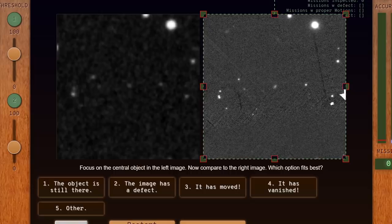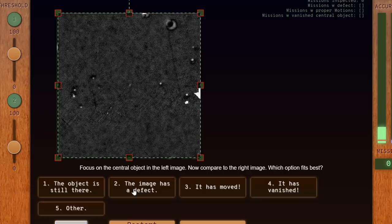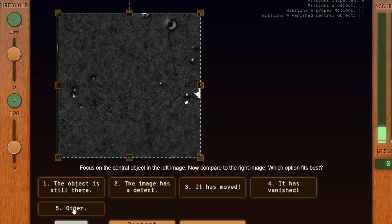But in short, you're given two pictures, one on the left and one on the right. And this is the old navy pictures, this is the more recent pictures from various surveys. And basically you're trying to find out if the object in the picture is still there, or if the image is bad in some way and cannot be used, if the object has moved, or if it vanished, or maybe something else happened entirely.